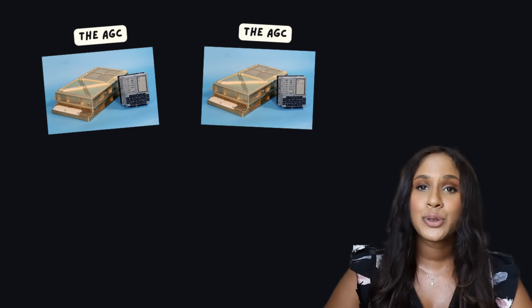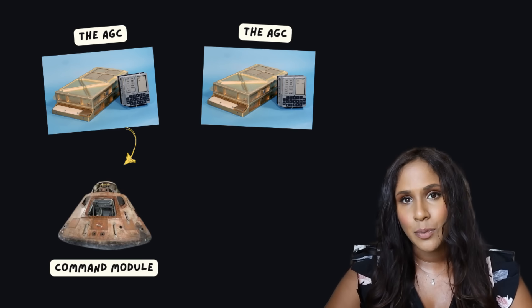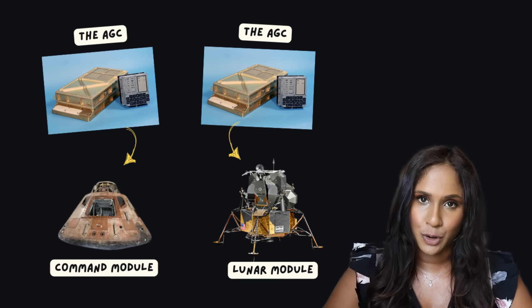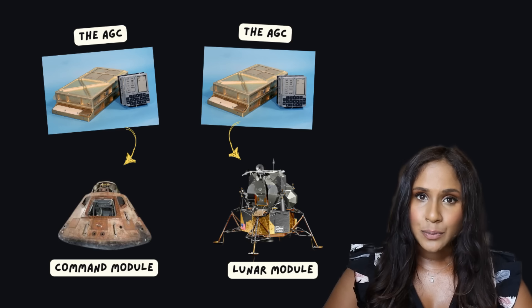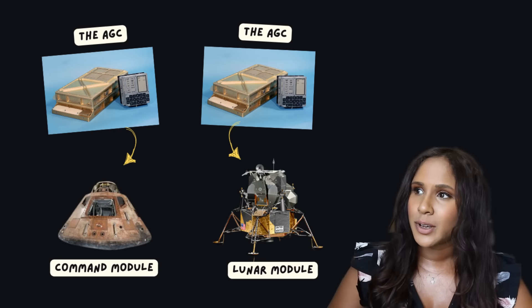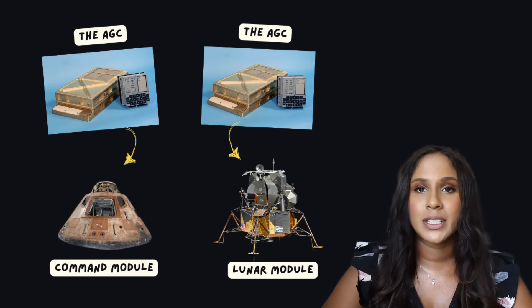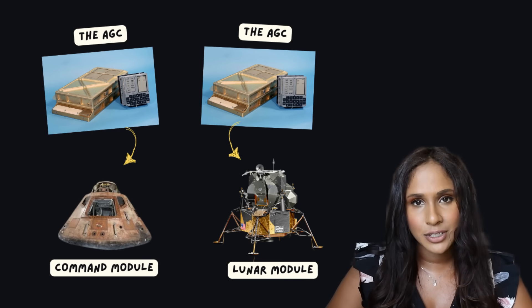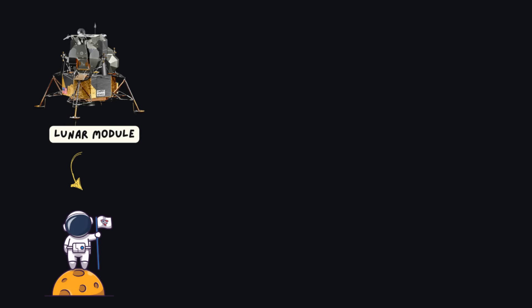The Apollo Guidance Computer, or AGC, was a component of the Apollo missions' guidance system. Each mission had two AGCs — one in the command module and one in the lunar module. Although the guidance computers were identical in hardware, they ran different software tailored to the specific tasks of each module. The lunar module's tasks were different from those of the command module.